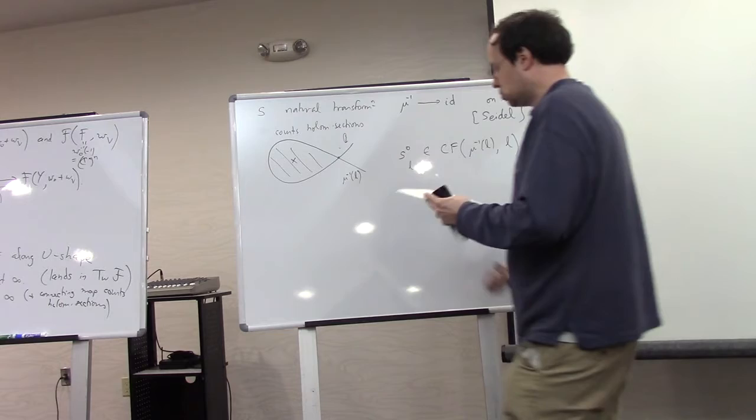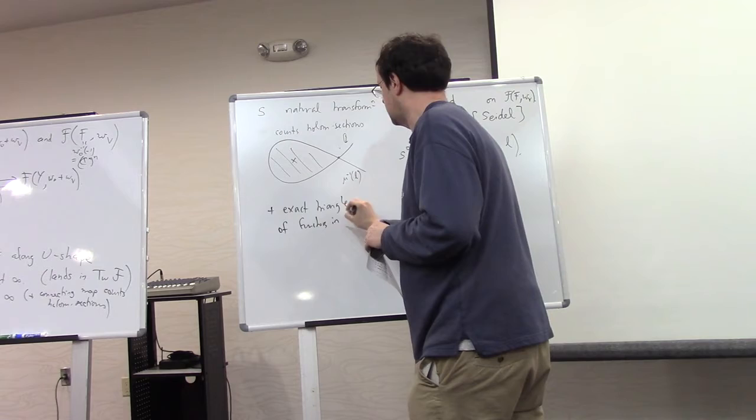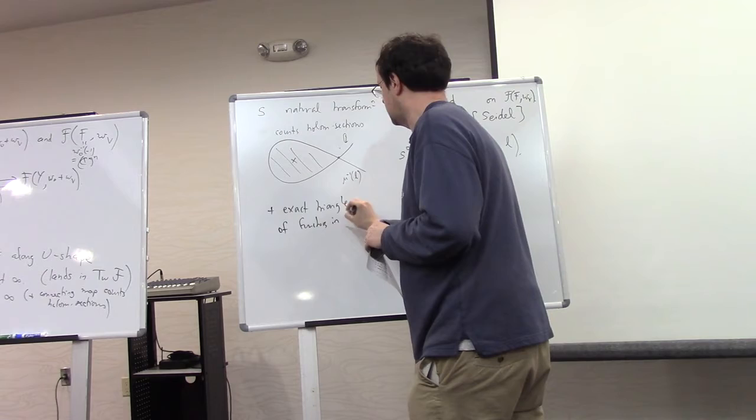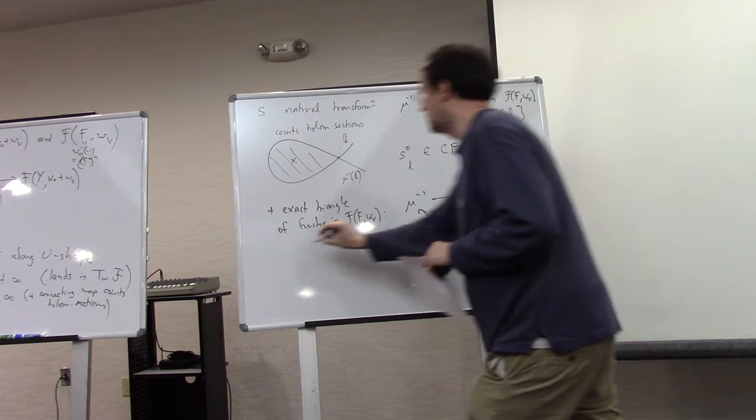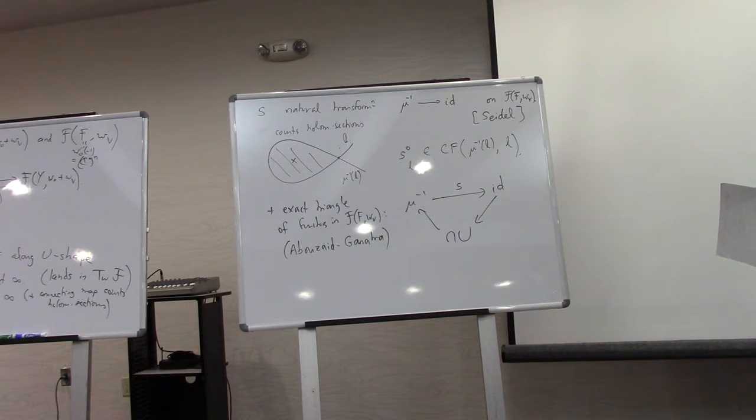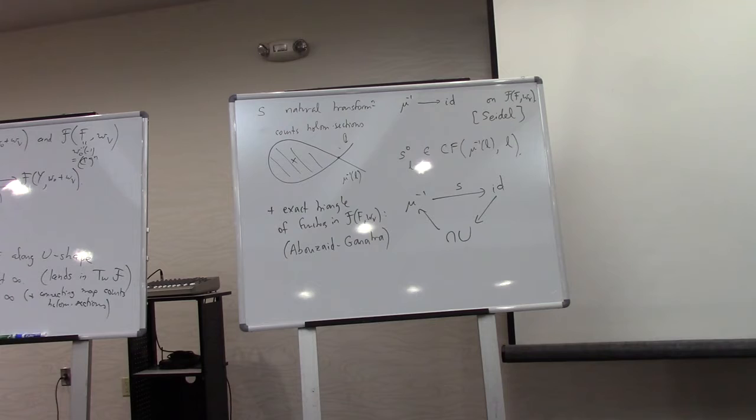And this gives me a term S0 sub L in the Floer complex or hom space of mu inverse L with L. As with any infinity natural transformation, there's higher order terms which count similar polygons obtained from a bunch of Lagrangians and counting now things with some inputs and one output. So, and now we have an exact triangle of functors in the category of the fiber.